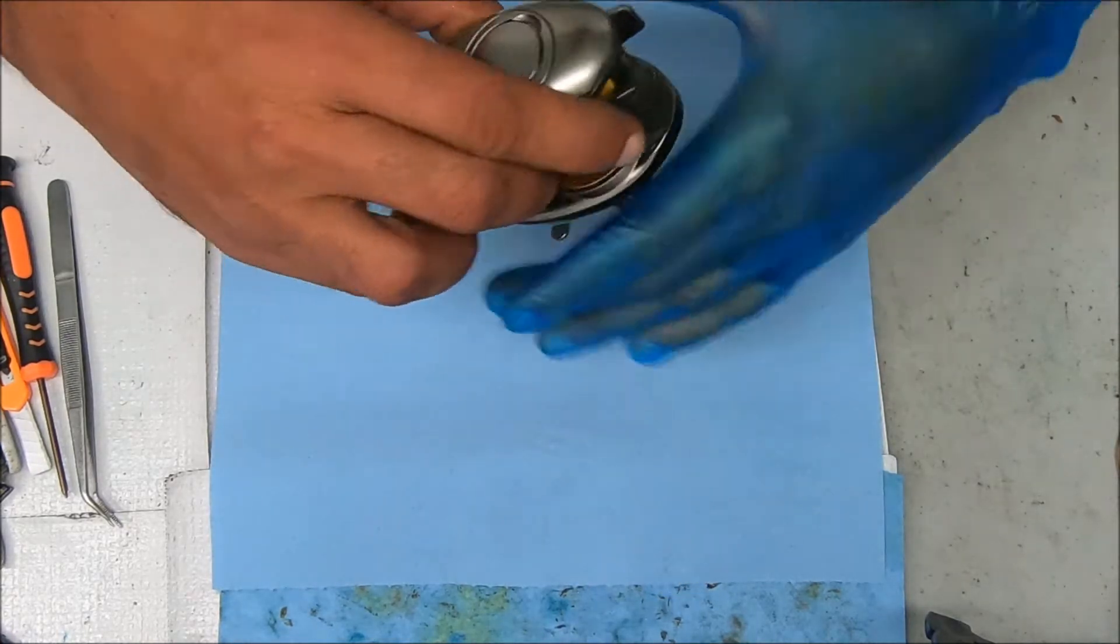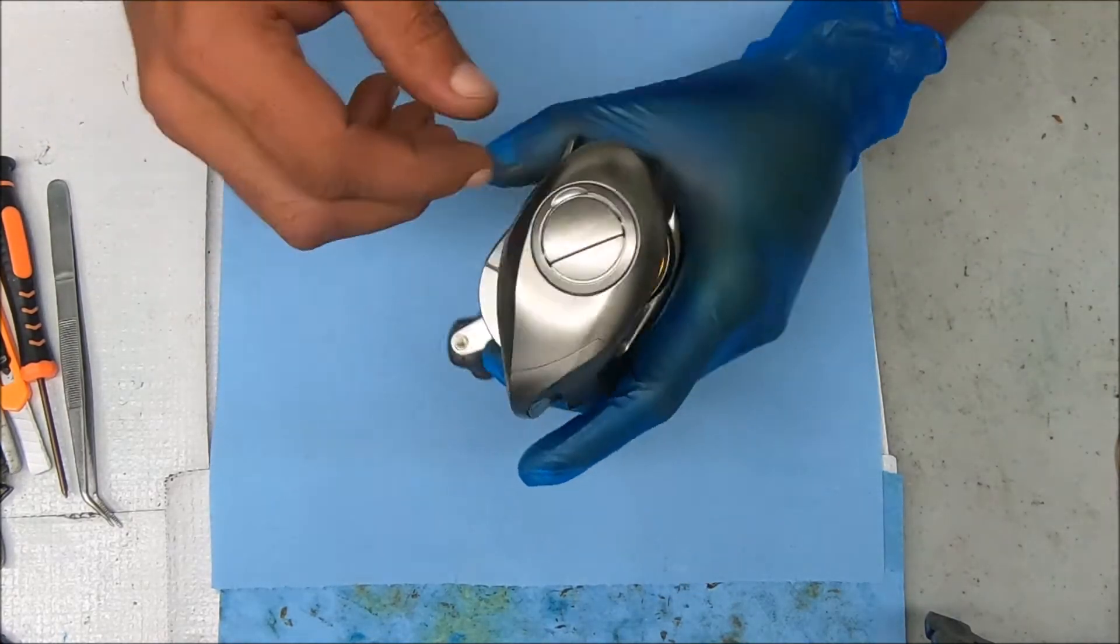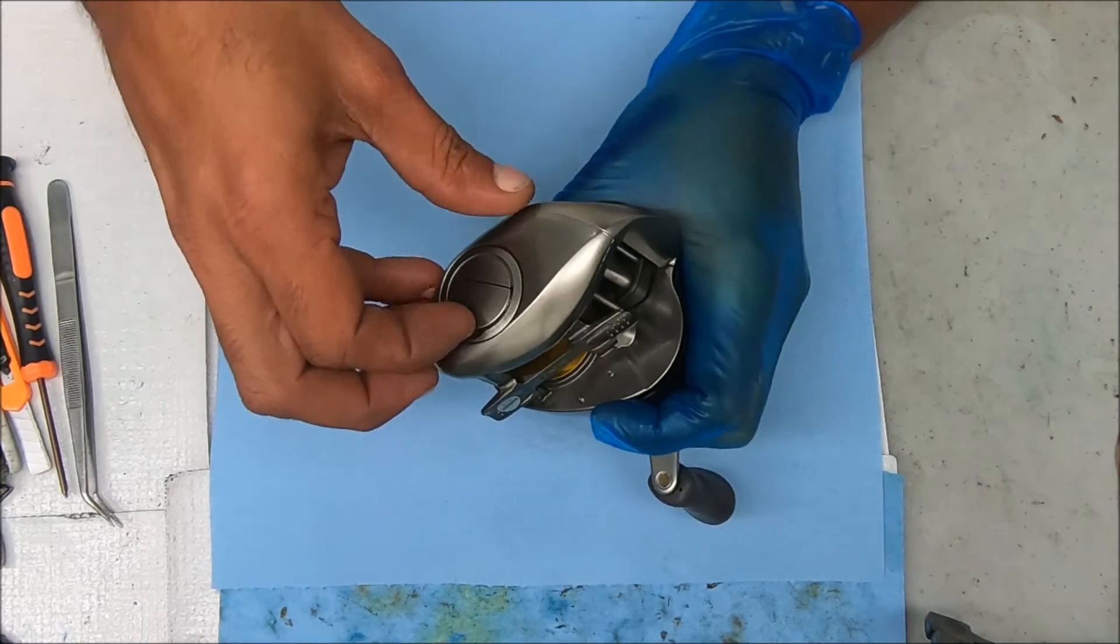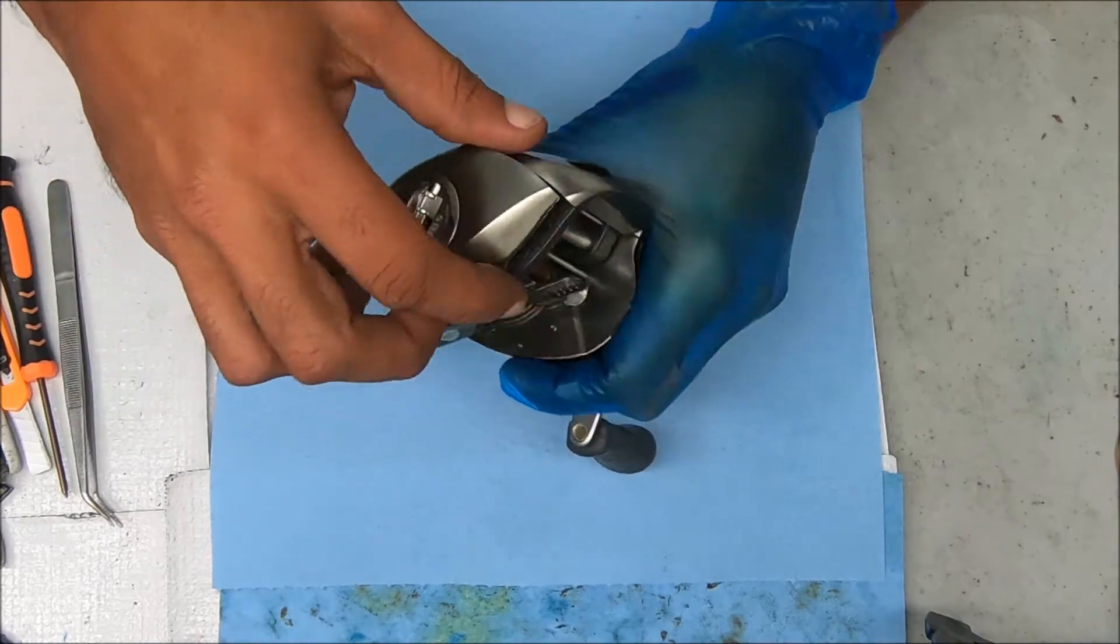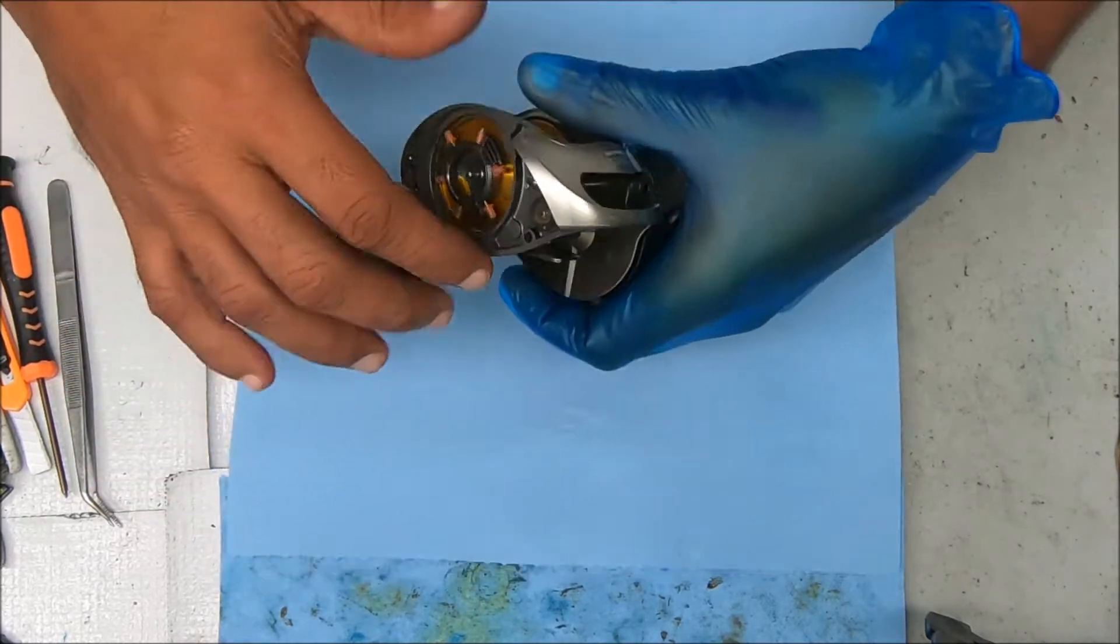We're going to start by undoing the side cover here to get the spool out. To do so you have to just simply pop it up, turn it to your left or counterclockwise, and it just comes straight out.